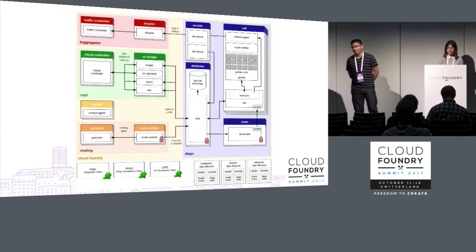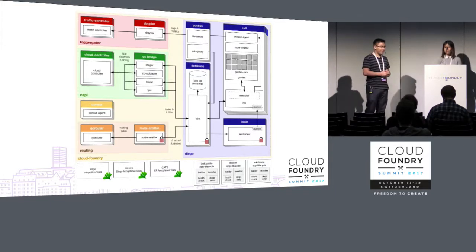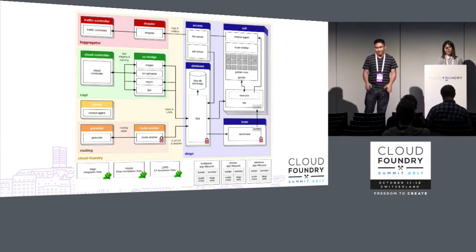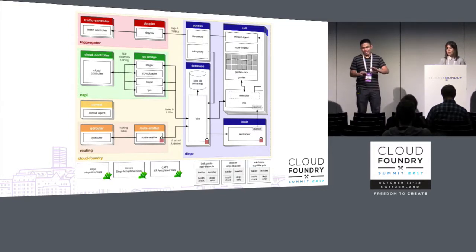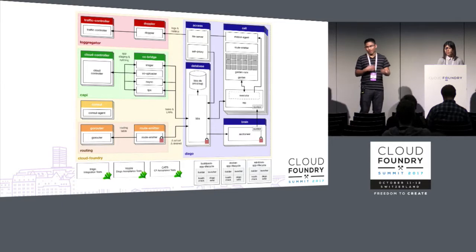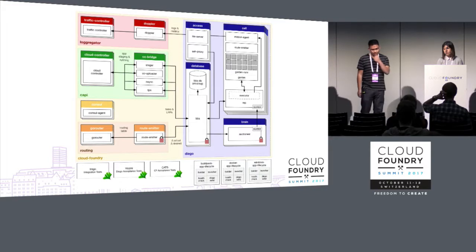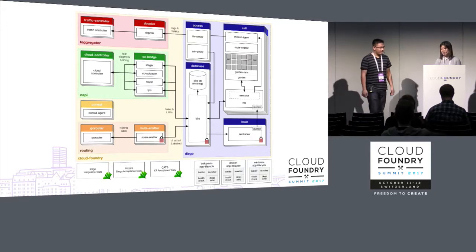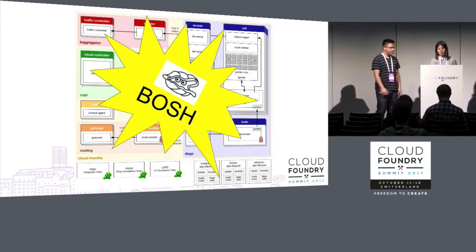To start us off, I want to describe what does it mean to deploy Cloud Foundry — what does it take? As you can see, this is a very complex diagram, which just shows all the VMs that you need to deploy Cloud Foundry, along with all the software and all the configuration, like what needs to talk to what. If you were to do this manually, it would be super complex. Luckily, we have a tool called BOSH which handles all of this for us.